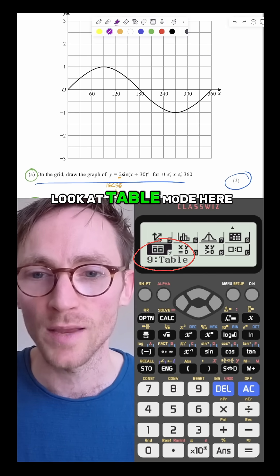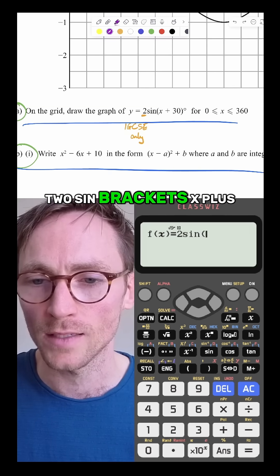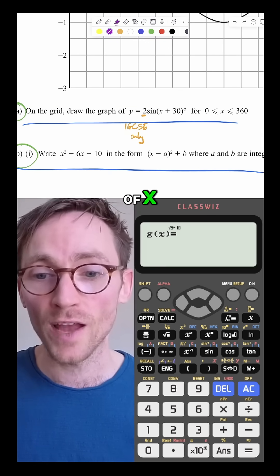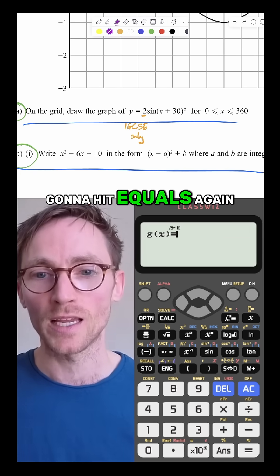So if you're stuck on this question, look at table mode here. Right, 2 sine brackets x plus 30 close brackets equals g of x. You leave blank, so we're going to hit equals again.